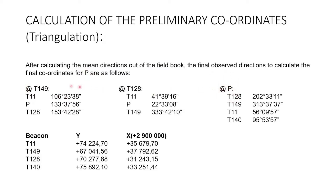Just a couple of things to highlight: points T128 and T149 have been observed by P, and P has been observed by both of those points. So these directions will be almost 180 degrees difference because they are opposite directions — these two stations are looking at P, and they also look at each other, while P looks at them. So these are incoming and outgoing directions. For example, T149 to P is 133 degrees, so the opposite direction, P to T149, will be 133 plus 180 which is 313 degrees — about 180 degrees difference.